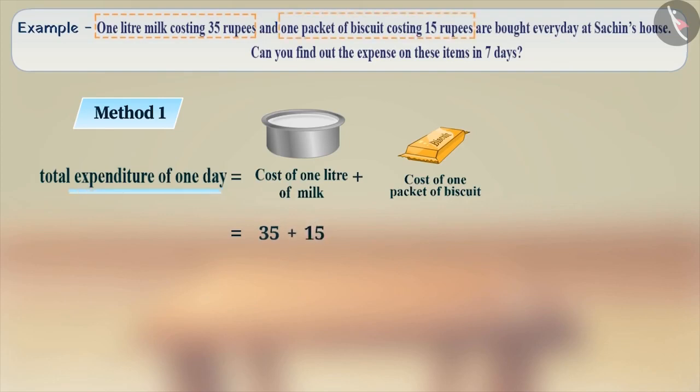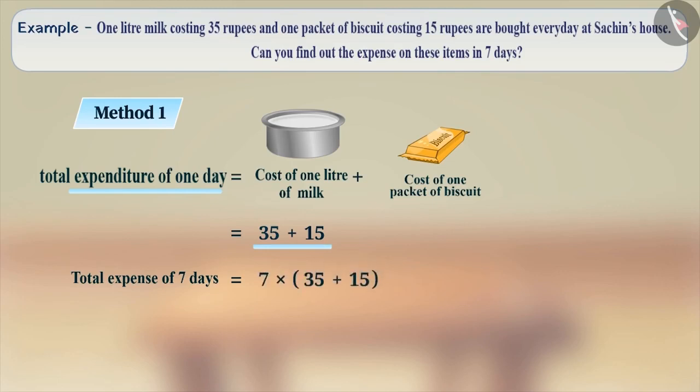Now, how do we find the expenditure for 7 days? Think for a while. We have to multiply the total expenditure of one day, i.e., 35 plus 15, by 7: 7 into (35 plus 15). After simplification, we get 7 into 50, which is equal to Rs. 350.